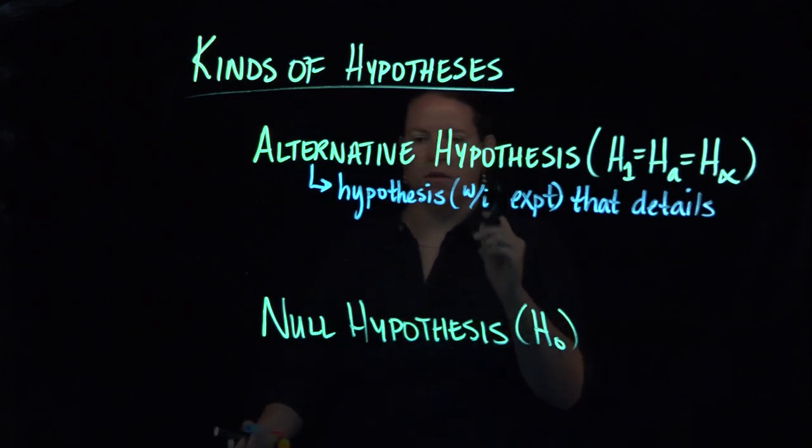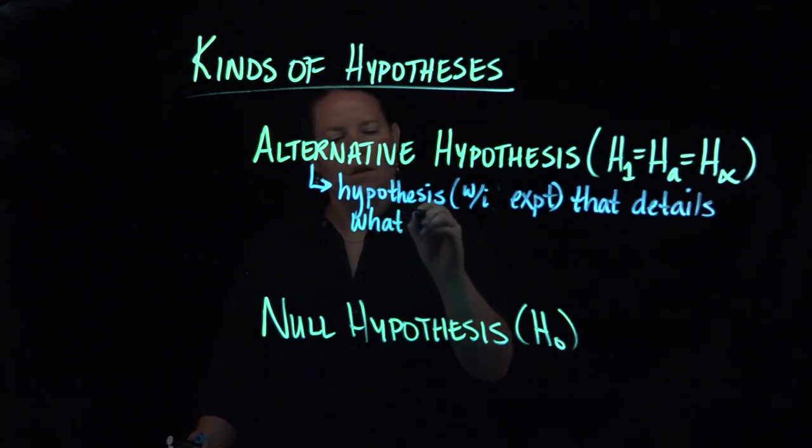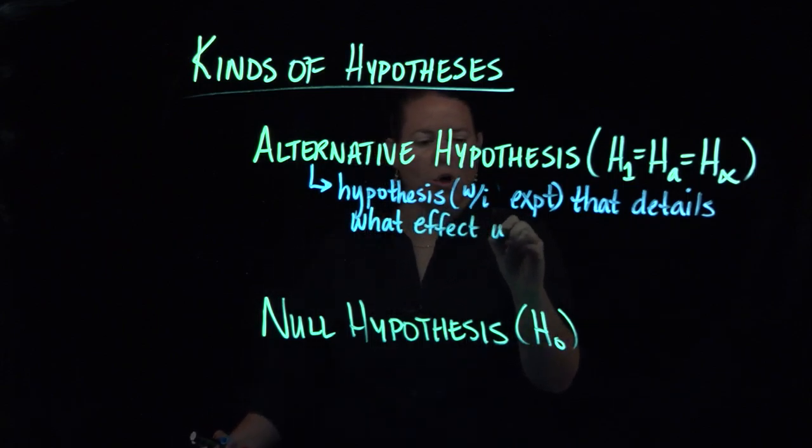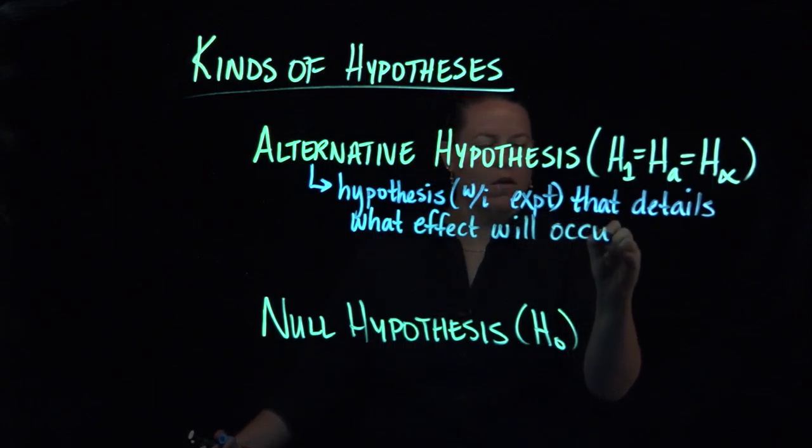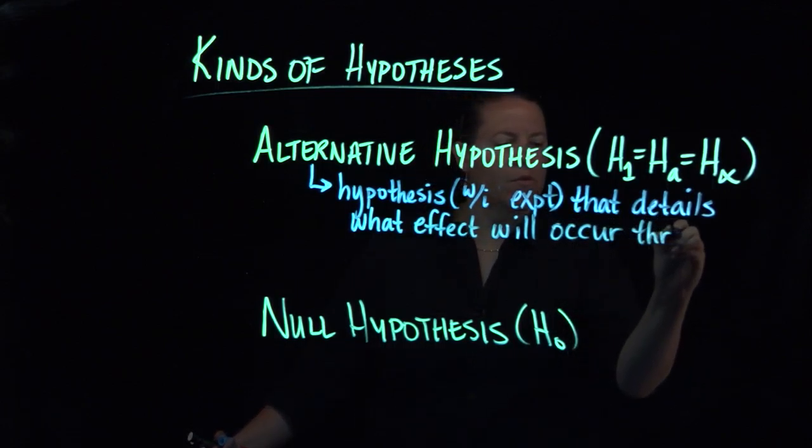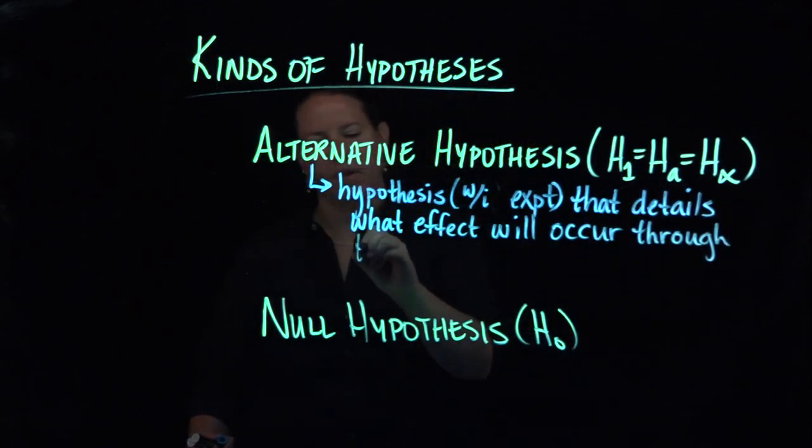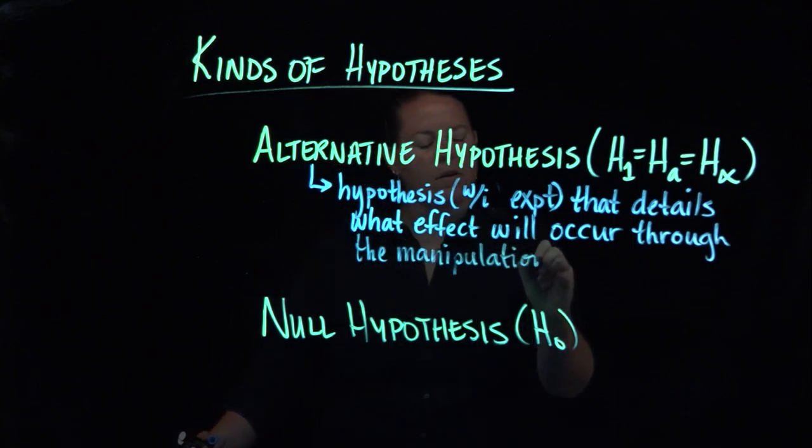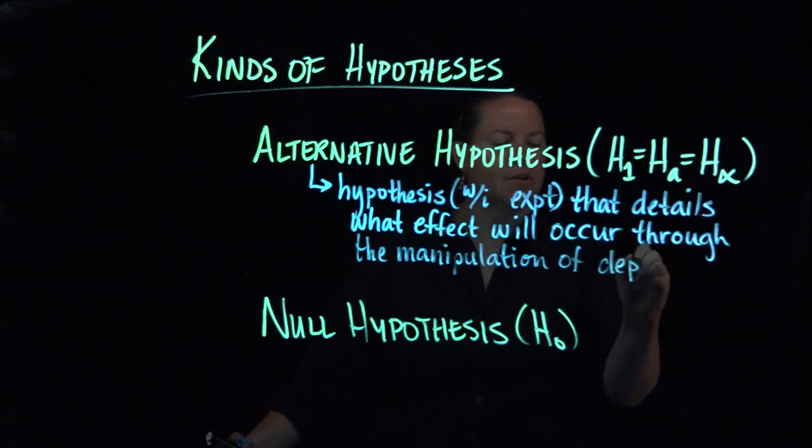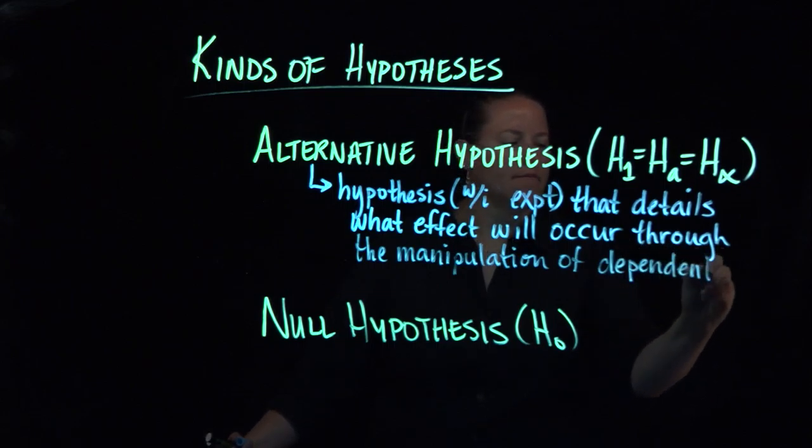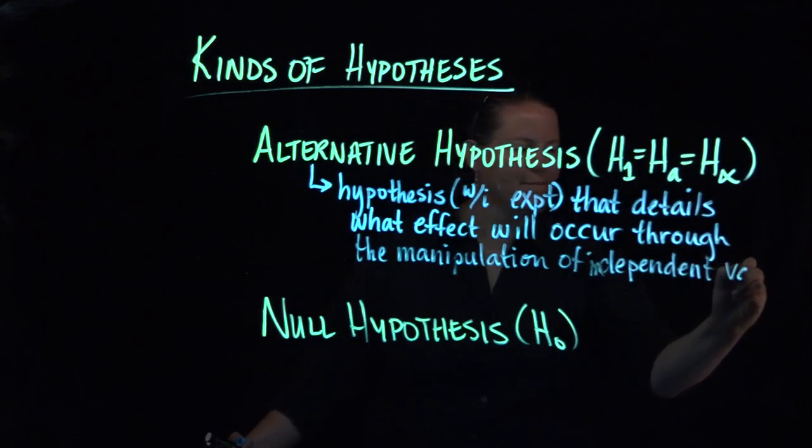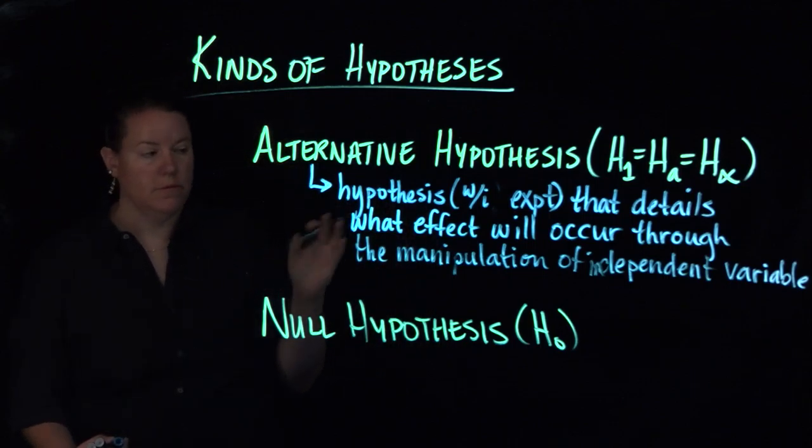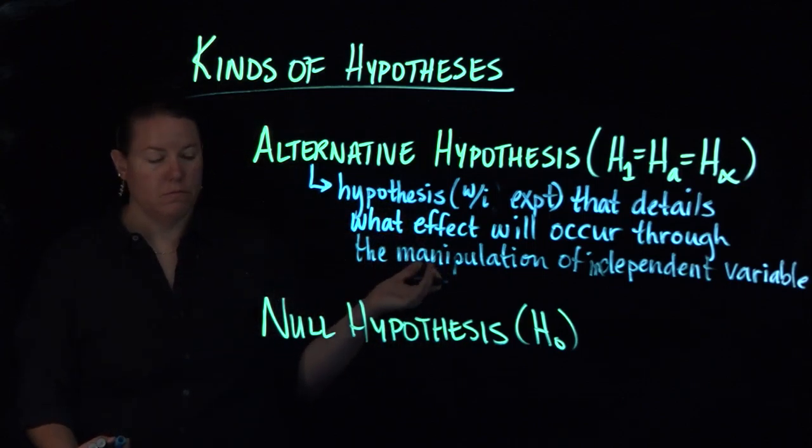It details what effect will occur through the manipulation of the independent variable. Sorry, get my variables right. Independent variable is manipulated. Dependent variable is what you actually see. That's what is actually done in the end and what's measured.